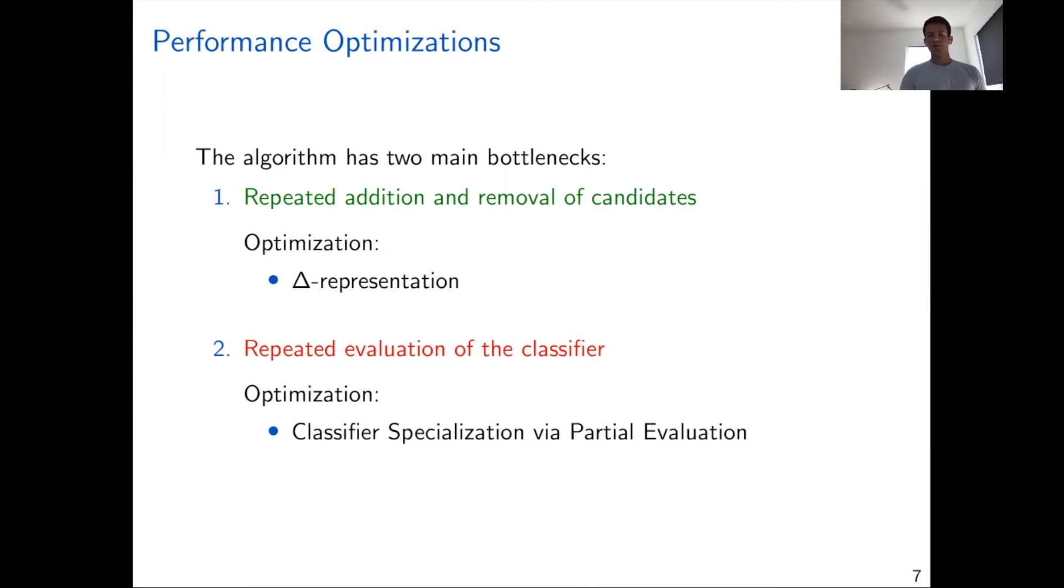The second bottleneck is that we repeatedly evaluate the classifier. And remember that this classifier can be arbitrarily complex, and so this could possibly add a lot of overhead. The optimization we introduced to mitigate this bottleneck is the specialization of the classifier using partial evaluation techniques, which I will briefly highlight next.